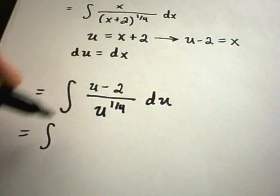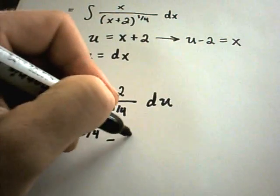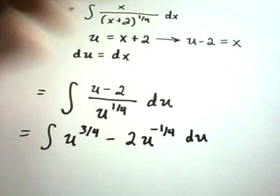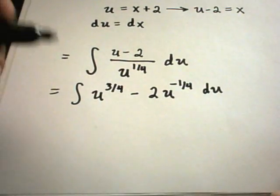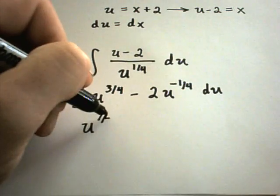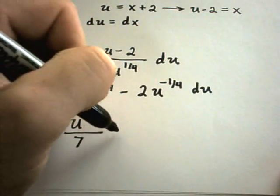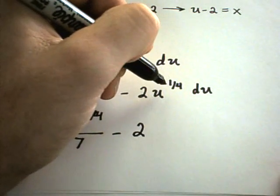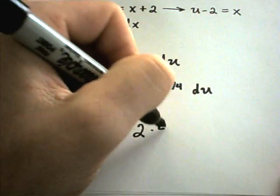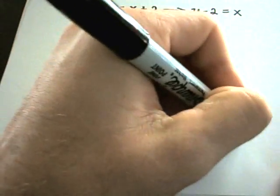And now we'll simply break this up. u over u to the one-fourth, that's going to become u to the three-fourths, minus 2 over u to the one-fourth. We'll bring that up and make it to the negative one-fourth. And now we'll simply integrate. So u, when we add 4 over 4, I'll get to the seven-fourths. Dividing by seven-fourths is the same thing as multiplying by four-sevenths. Minus 2, u to the negative one-fourth. If I add 4 over 4, I'm going to get u to the three-fourths. I'll have to divide by three-fourths, which is the same as multiplying by four-thirds. Plus c.